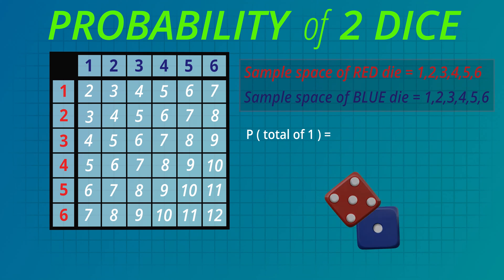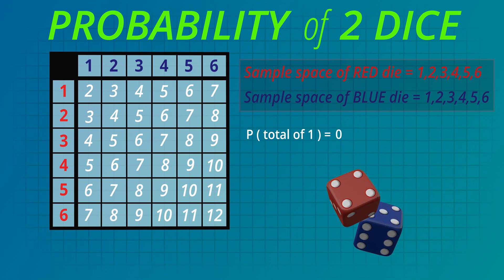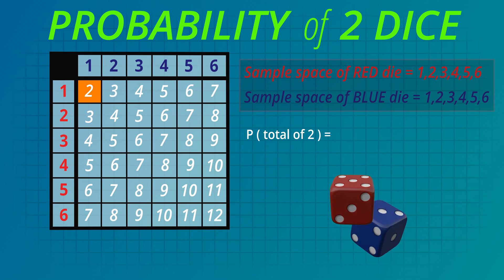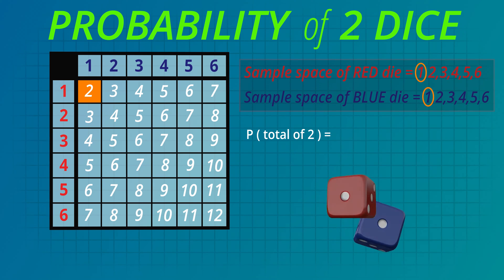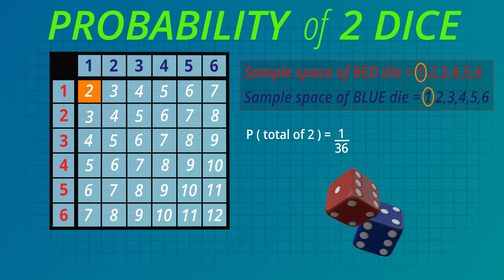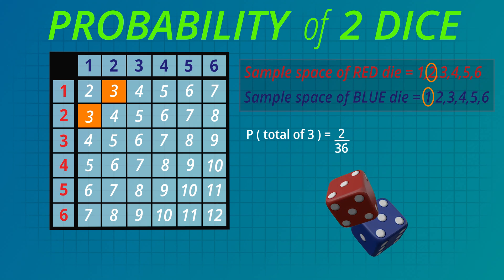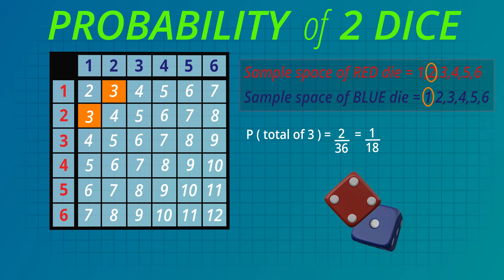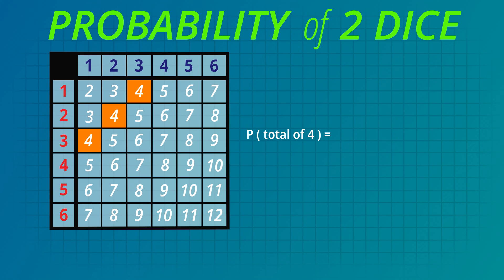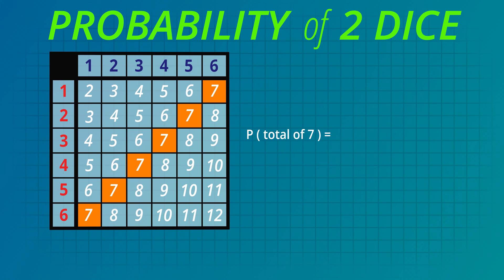Now let's look at the total of the two dice. What is the probability of tossing a total of 1? Zero — it's not possible. What about a total of 2? That's a 1 on the red die and a 1 on the blue die; the chance of a total of 2 is only 1 out of 36. A total of 3 could be a 1 on the red die and a 2 on the blue die, or a 2 on the red die and a 1 on the blue die — that's 2 out of 36, simplified to 1 out of 18. A total of 4 has a probability of 3 out of 36, or one twelfth. A total of 5 is 4 out of 36, or one ninth. A total of 6 is 5 out of 36. A total of 7 is 6 out of 36, or one sixth.